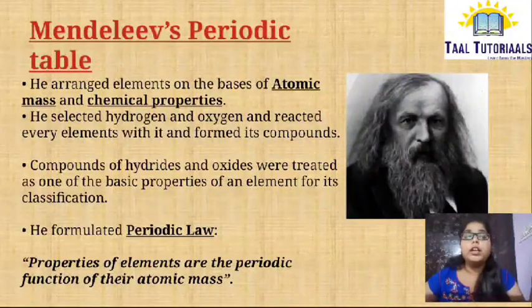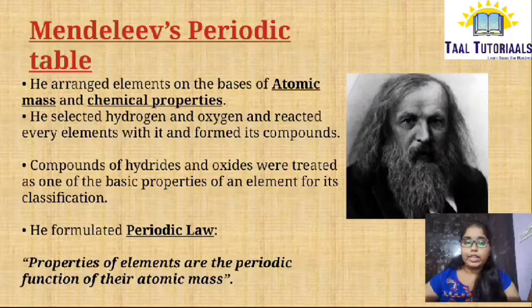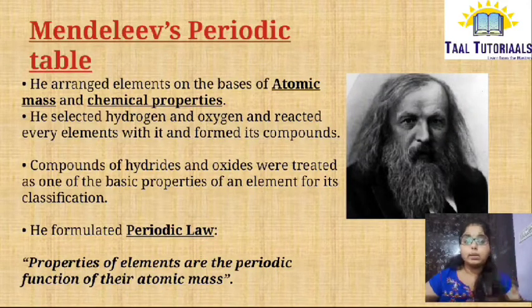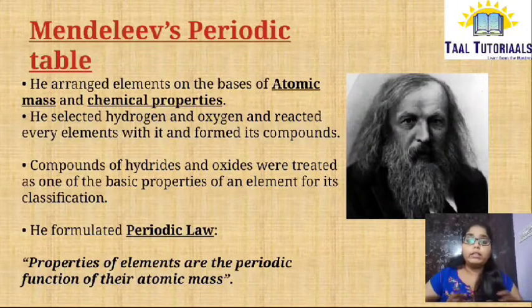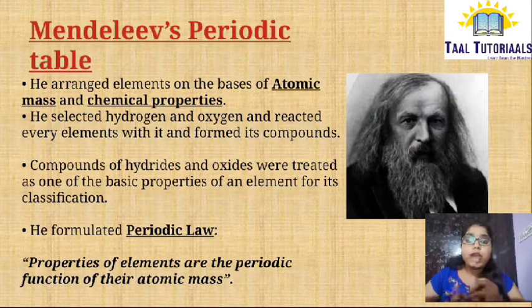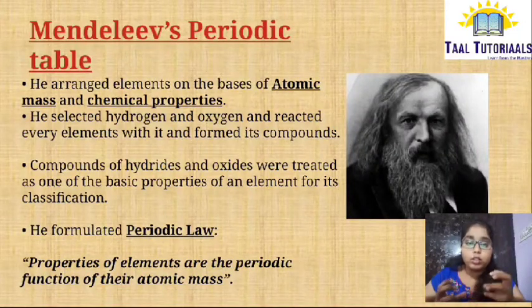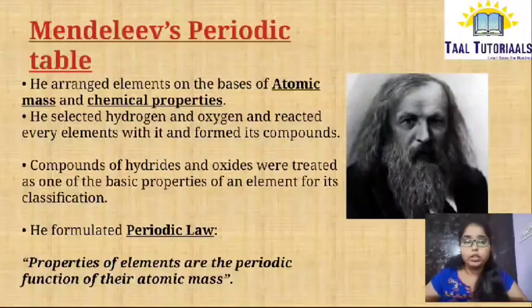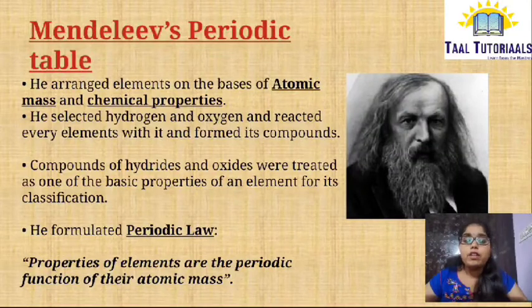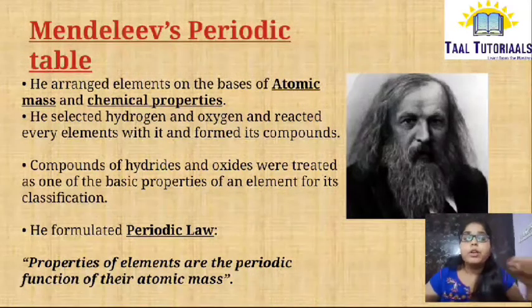Next came Mendeleev's Periodic Table. He arranged elements on the basis of atomic mass and chemical properties, taking atomic mass as the main fundamental property. He made all elements react with hydrogen and oxygen — reacting with hydrogen gives hydrides, and reacting with oxygen gives oxides. Based on the reactivity of elements with hydrogen and oxygen, he placed all elements in the periodic table. He formulated the periodic law: properties of elements are the periodic function of their atomic mass, meaning the arrangement depends on atomic mass.